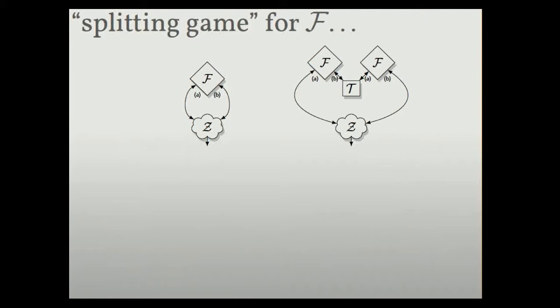In the other interaction, we have two independent instances of the functionality. We have the same environment, but we have this other player, T. So think of T as the synchronizer. And the instances of F are hooked up in opposite polarities so that Z still is talking as Alice on one side and Bob on the other side.